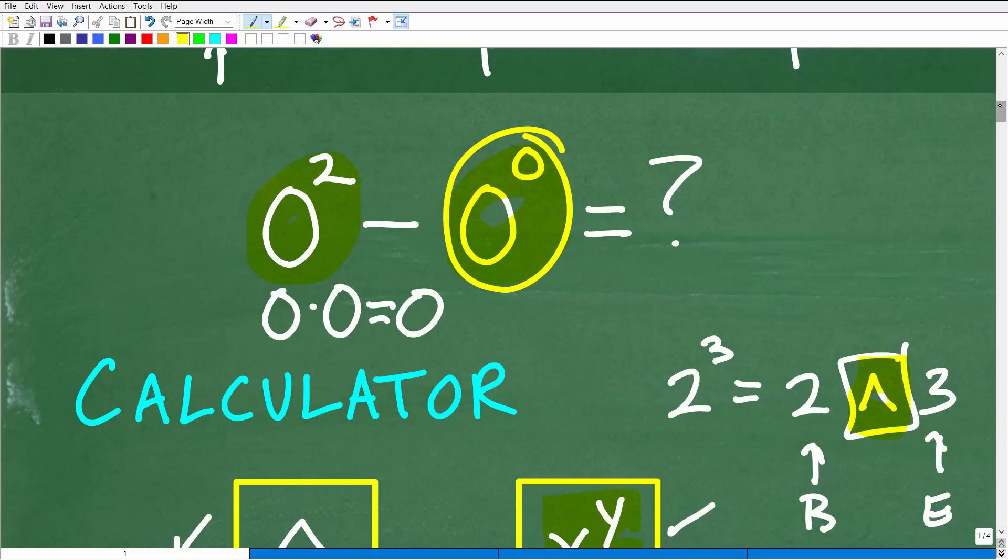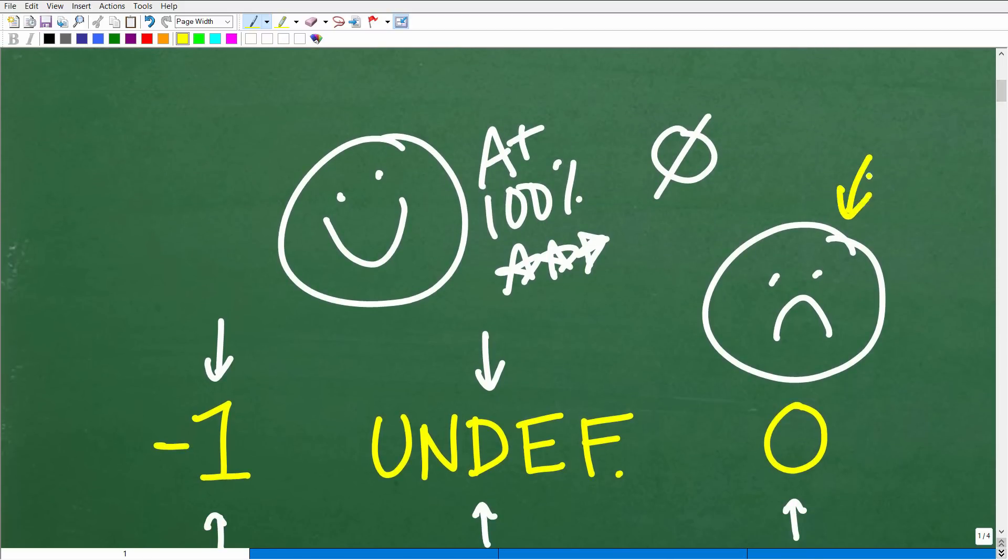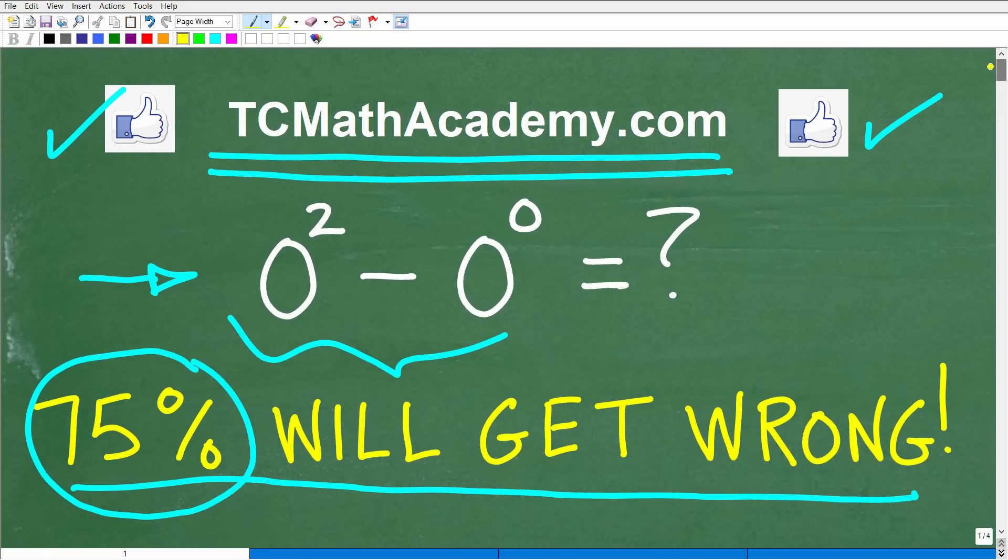So if you were confused, well, I'm sure you weren't the only one. And don't feel so bad if you thought the answer was 0. Again, a lot of you out there probably, you know, answer that. And is this a trick question? Well, maybe it's a little bit of a trick question. But, you know, 0 is a number, you know, that you're going to have to know how to deal with.